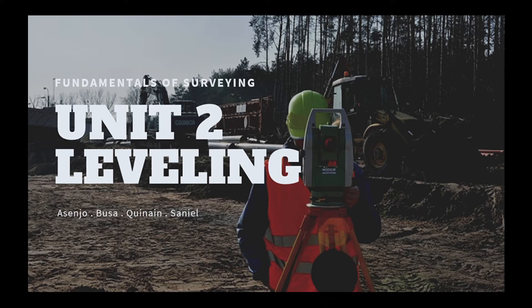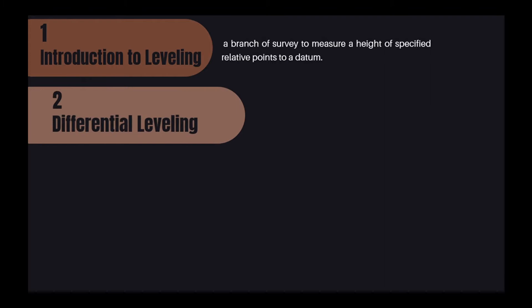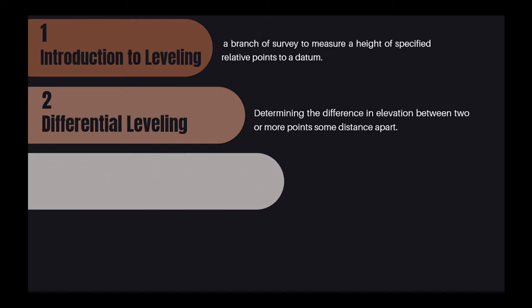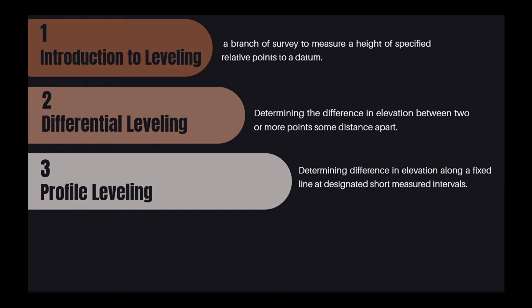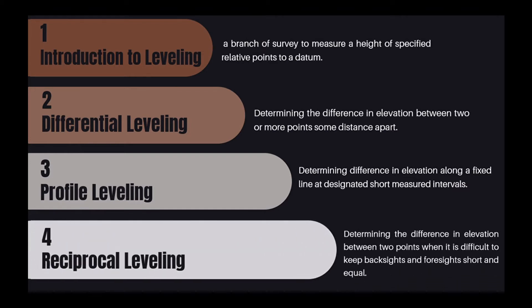These are the topics to be covered by our report. First is the introduction to leveling and surveying, which is a branch of survey to measure a height of specified relative points to a datum. Second is differential leveling, which is determining the difference in elevation between two or more points some distance apart. Third is profile leveling, which is determining difference in elevation along a fixed line at designated short measured intervals. And lastly, reciprocal leveling, which is determining the difference in elevation between two points when it is difficult to keep backsights and foresights short and equal.